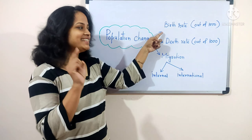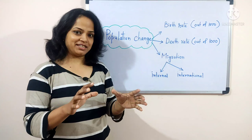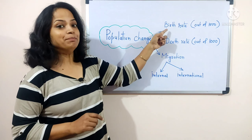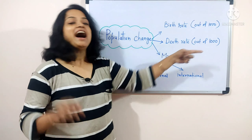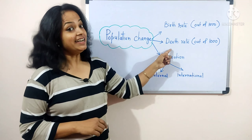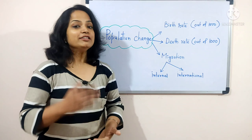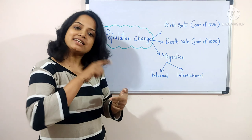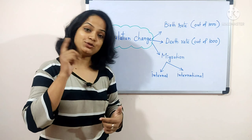The main reasons behind population change are: first, birth rate; second, death rate; and third, migration. You can get many questions from here. For birth rate — remember it is per thousand, not per hundred — out of every thousand, how many children are born is the birth rate. Similarly for death rate, out of every thousand, how many deaths occur is the death rate.